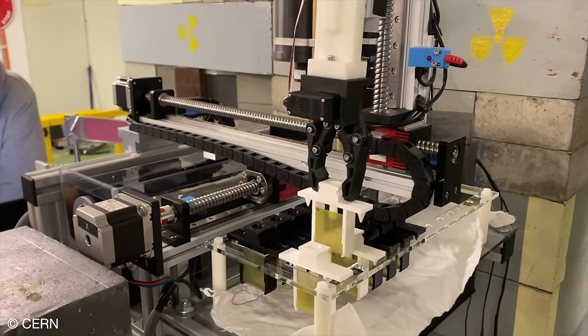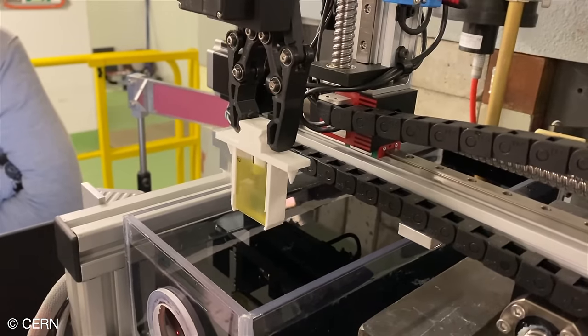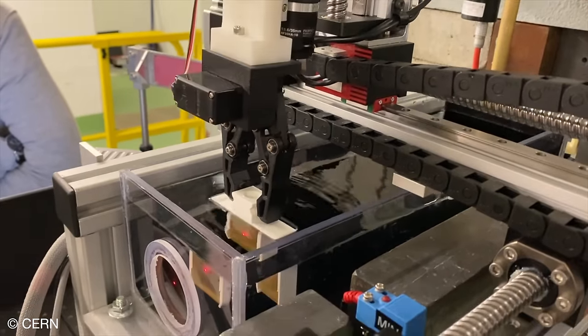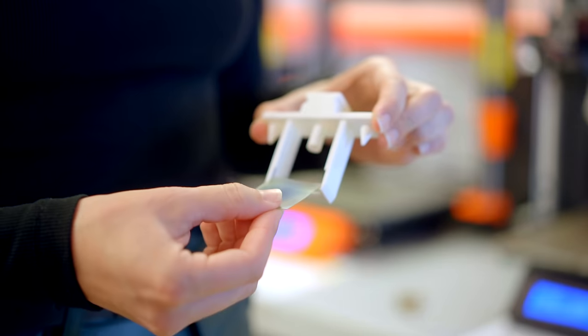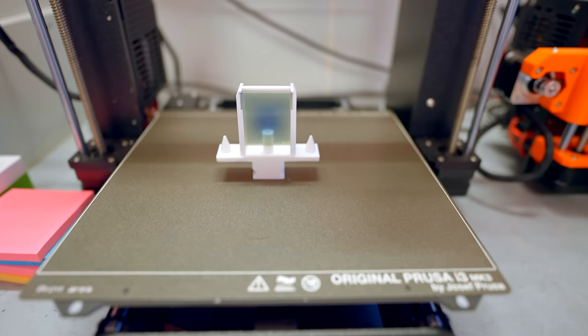The robot has 32 sample holders that it can change automatically without having to stop the beam, which saves time. The sample holders are 3D printed with the Prusa printers here at IdeaSquare.